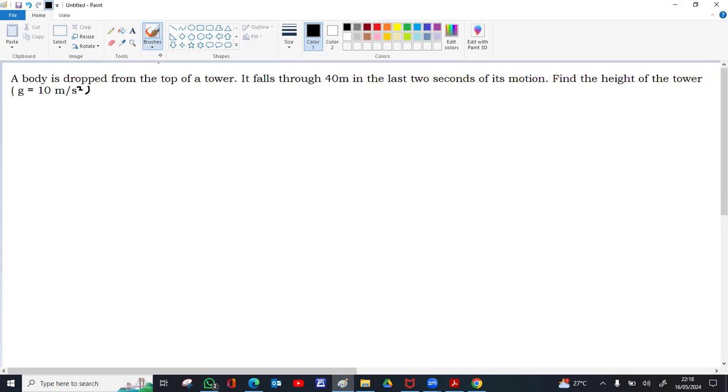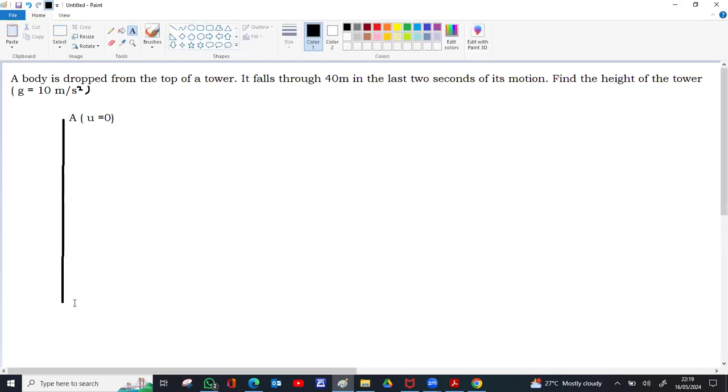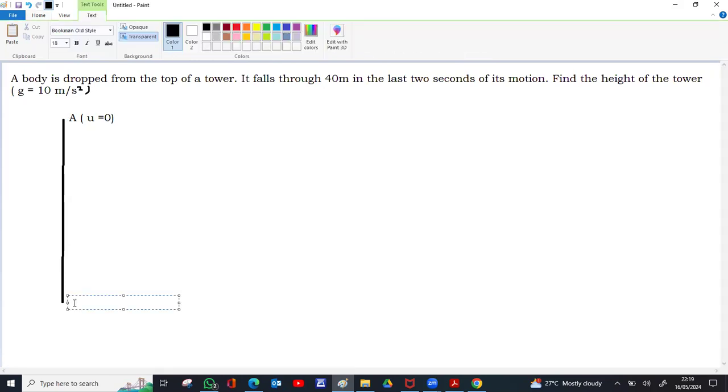A body is dropped from the top of a tower. Here represents the top of the tower. The velocity, since it's dropped, is zero. B is the foot of the tower.